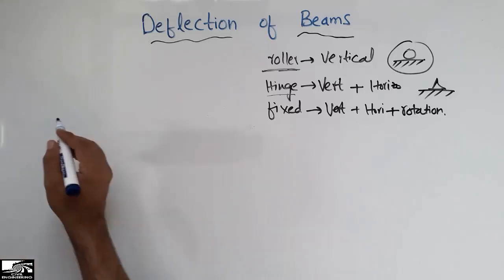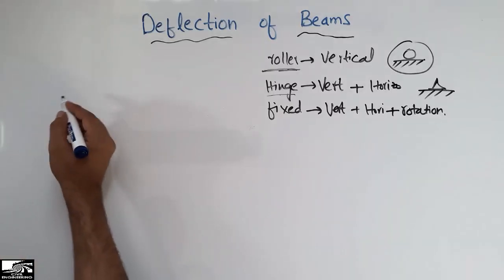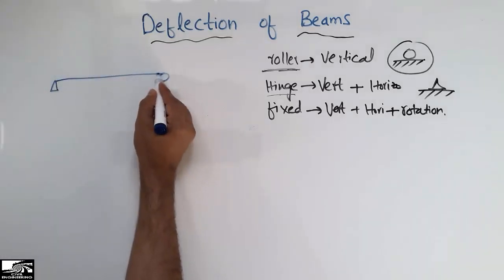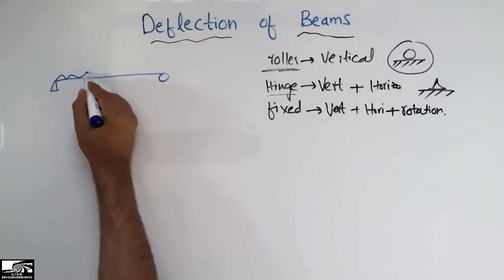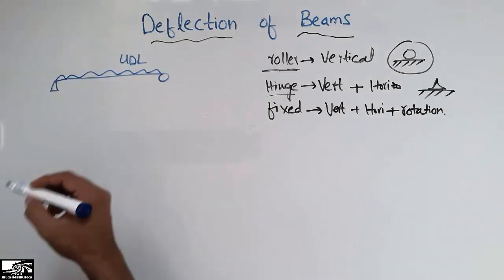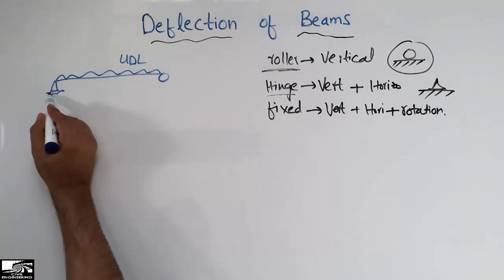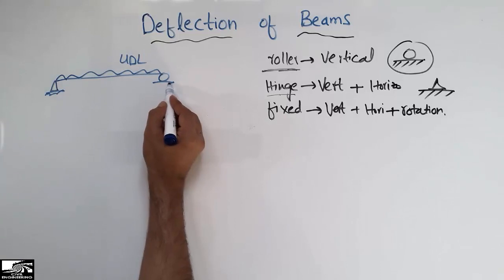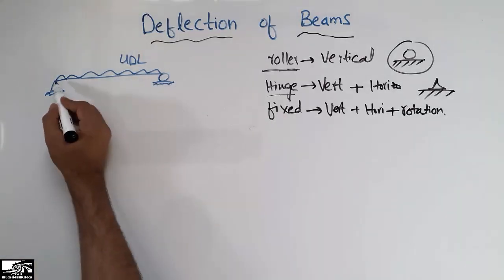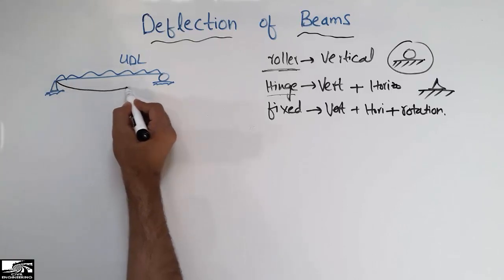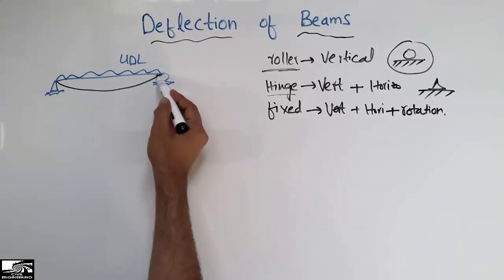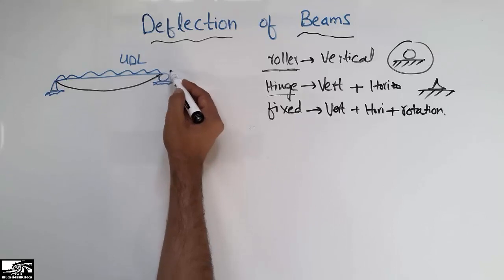Now I'm going to draw the deflected shape of different types of beams. First, I'll start with the simply supported beam — a simple case with a uniformly distributed load, UDL. We have a hinge support on one end and a roller support on the other. The roller cannot resist rotation, so the beam will rotate and deflect.